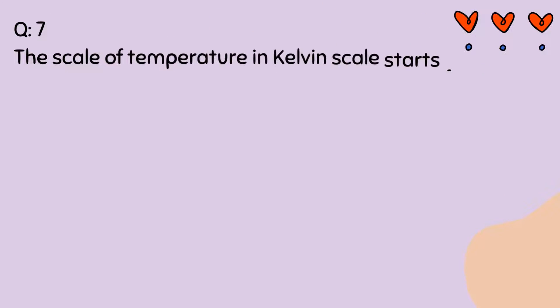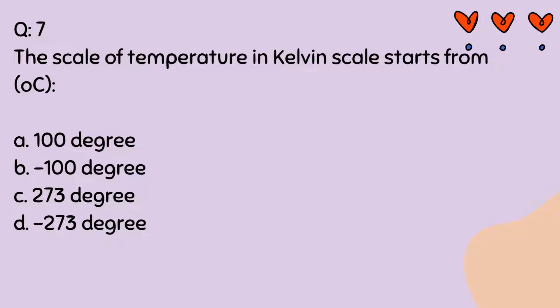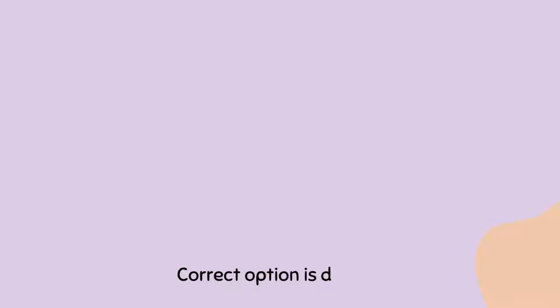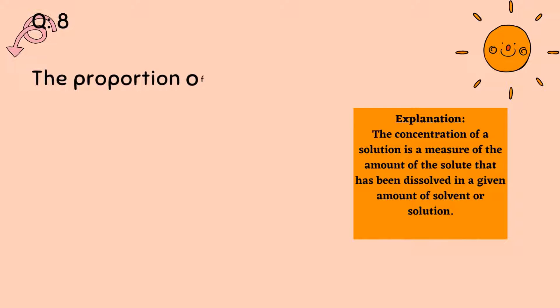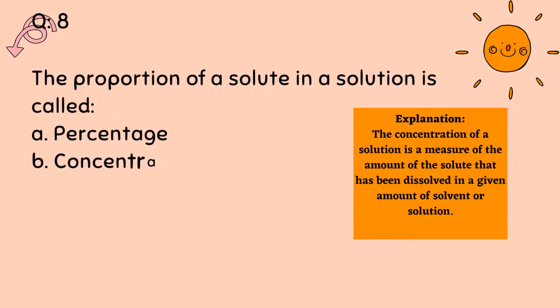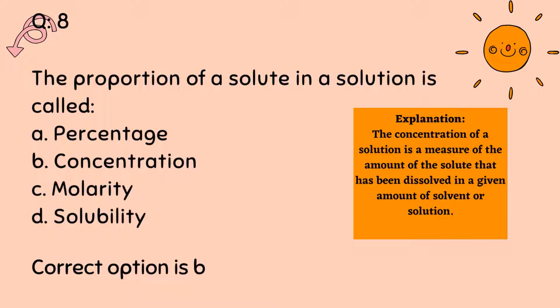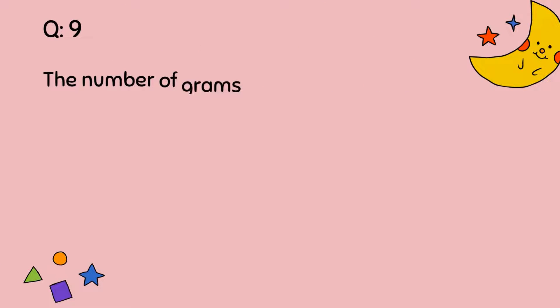Question number 7. The scale of temperature in Kelvin scale starts from: A, 100 degree, B, minus 100 degree, C, 273 degree, D, minus 273 degree. Correct option is D. Question number 8. The proportion of a solute in a solution is called: A, Percentage, B, Concentration, C, Molarity, D, Solubility. Correct option is B. In the side box you can see explanation of answer.